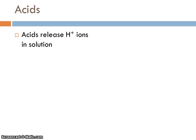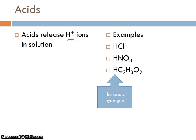First, let's talk about acids. Acids, according to Arrhenius theory, release hydrogen ions in solution. Some common examples are hydrochloric acid, nitric acid, and acetic acid. Only that first hydrogen in the acetic acid is an ionizable acidic hydrogen. That's why I wrote it with the H in the cation position.